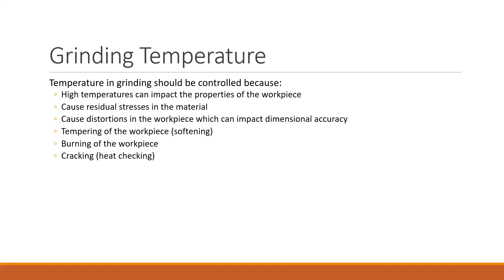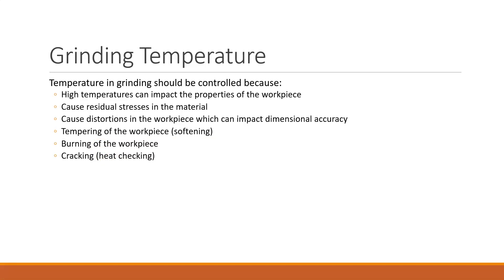Regarding grinding temperature — the other key part of this discussion — temperature must be controlled, otherwise you get residual stresses, tempering, burning, and heat checking. Surface temperature rises in proportion to depth of cut, wheel diameter, and relative speed — your cutting parameters. This equation doesn't need to be memorized, but understand that the temperature rise in the process is proportional to those same variables: depth of cut, wheel diameter, and speeds. Notice that a theme across these equations is that the same variables keep showing up in different forms.